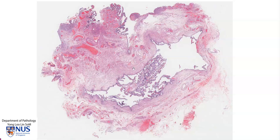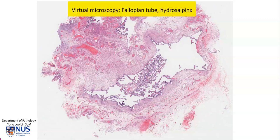This is a virtual microscopy slide showing a cross-section of a fallopian tube with hydrosalpinx. Hydrosalpinx is the cystic distension or dilatation of the fallopian tube; the tube is usually filled with fluid, and this is secondary to distal obstruction.